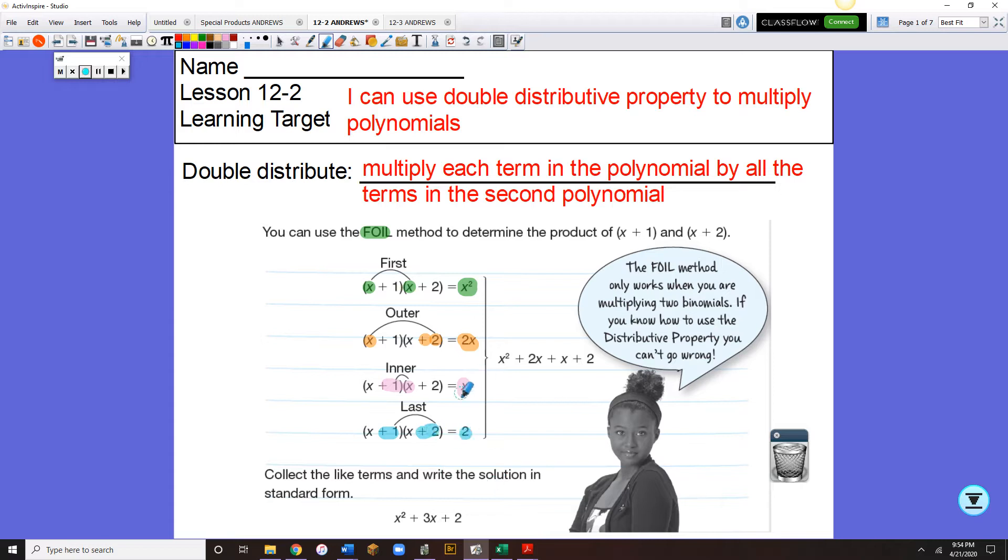Okay, then after you're done, you have these terms, and we've added the plus signs because these are all positive. But you'll notice that in the middle, you have like terms that can be combined. x squared plus 3x plus 2.